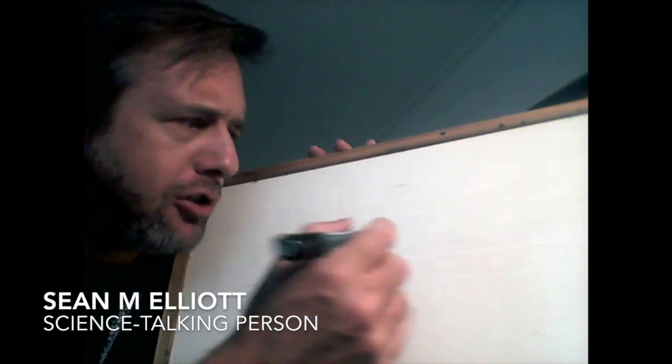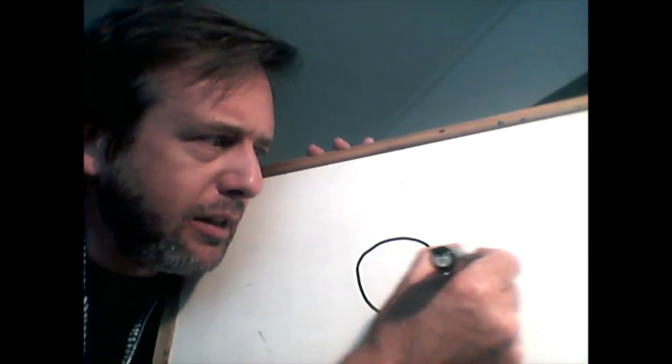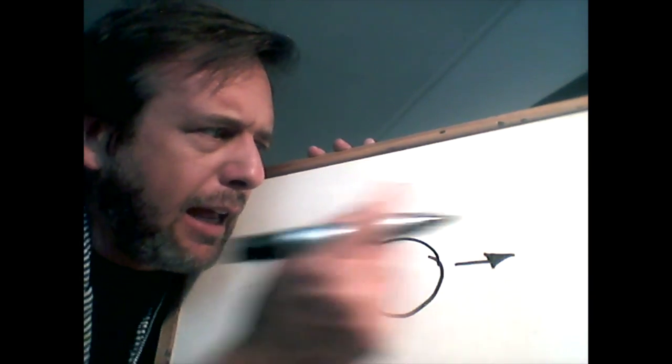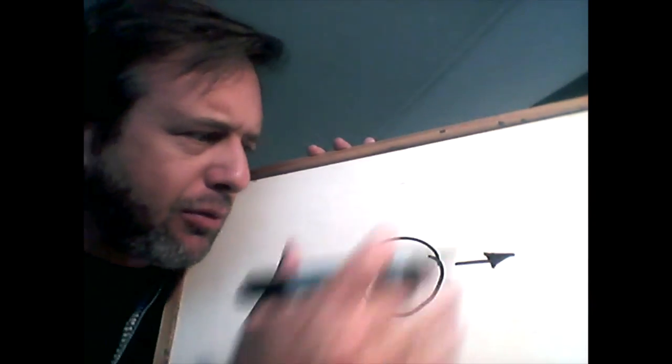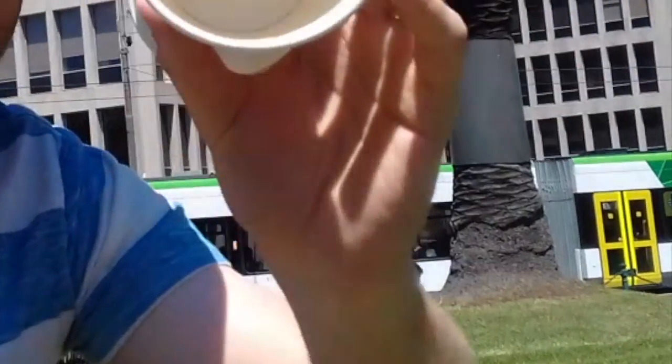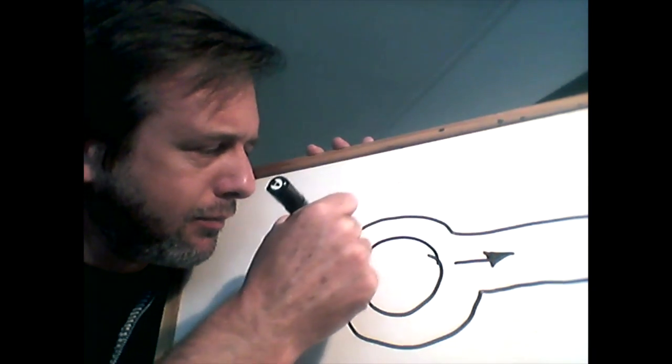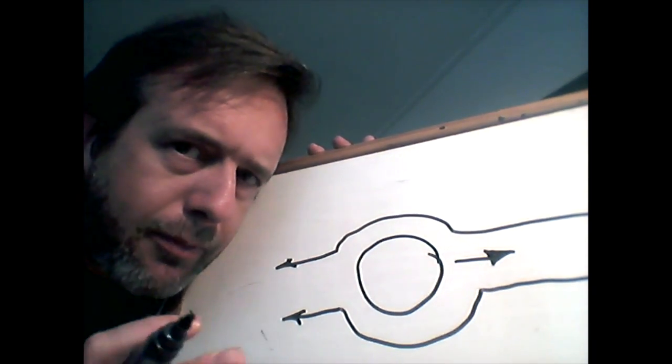So imagine this: imagine a round object and it's moving through air, say it's moving in this direction, and the air is separating evenly on both sides of the object so it passes around it like this. Now imagine that that object is now rotating.